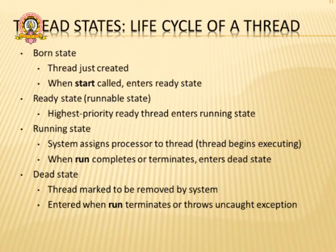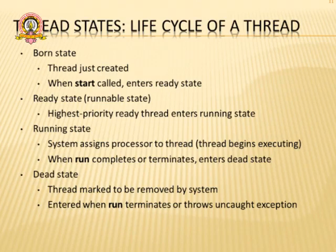Next is the running state. When the process is executing and active, that state is called the executing or running state. Next is the dead state. The thread reaches the dead state when it is terminated — it does not have any memory and has been removed from memory. Or if the programmer purposefully terminates the thread, it also enters the dead state. The thread also enters the dead state when it has completed its execution.